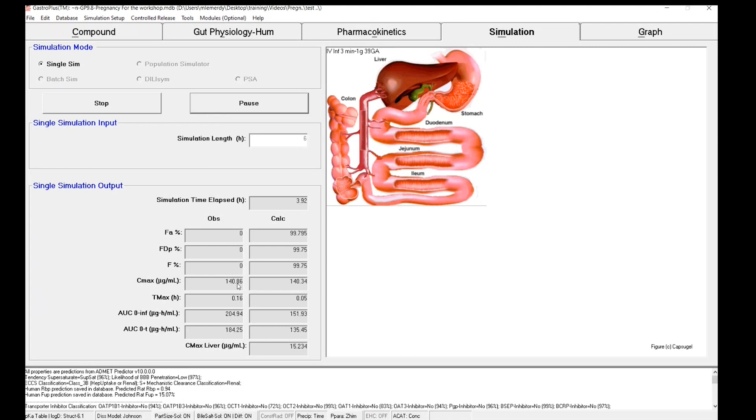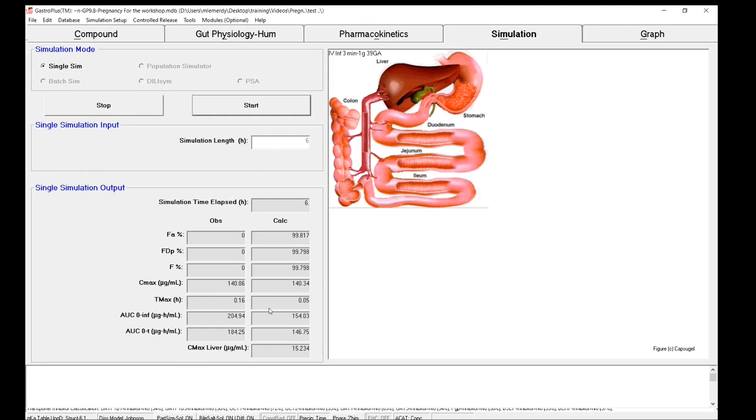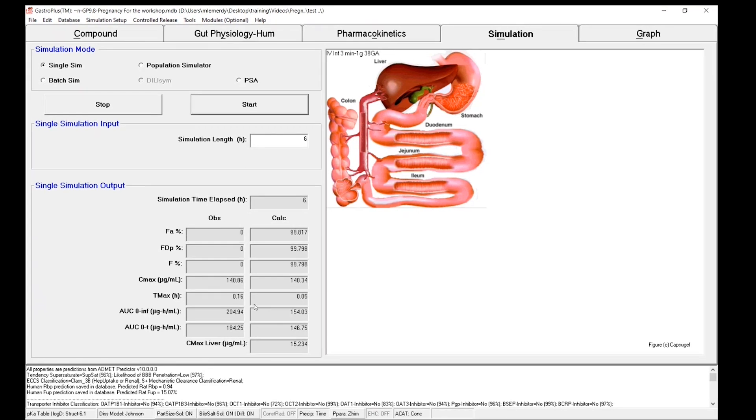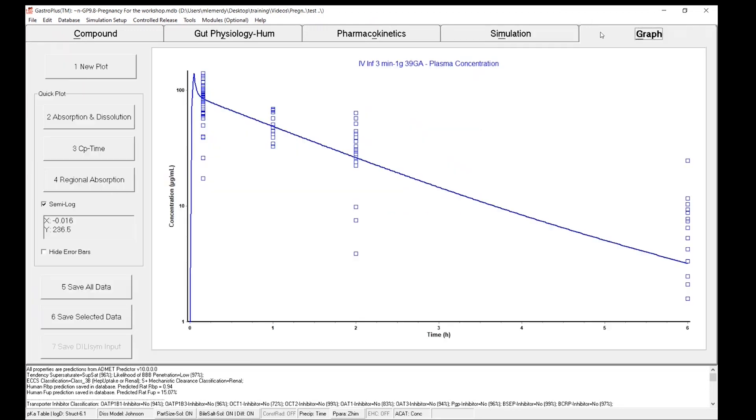Cmax has changed slightly, but the prediction is still really good. And from the AUC side, the prediction is pretty much the same. So from the maternal side, changing the placenta structure had a very limited impact. And this is what we can see once again on this graph.